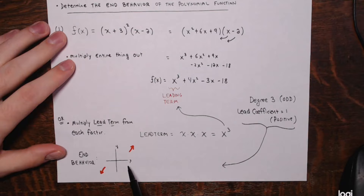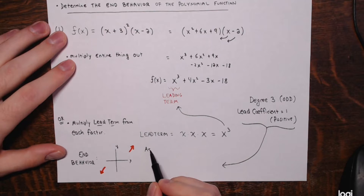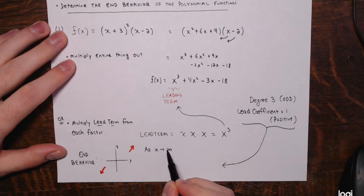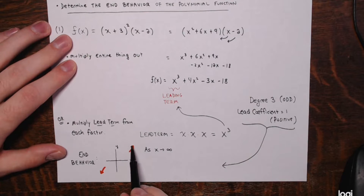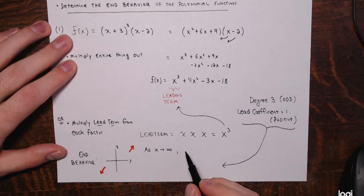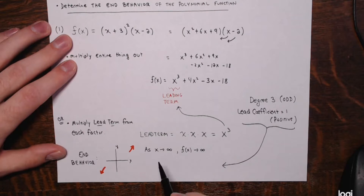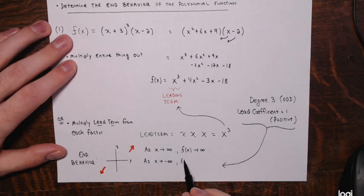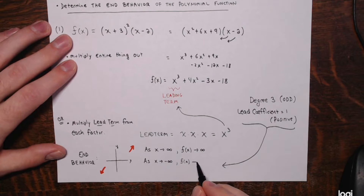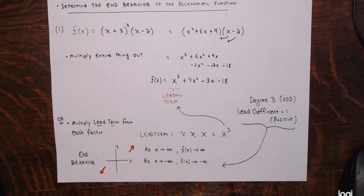In arrow notation: as x approaches positive infinity (the right end), f(x) also approaches positive infinity. That's the right end behavior. And as x approaches negative infinity (going to the left forever), f(x) is going to negative infinity as well.